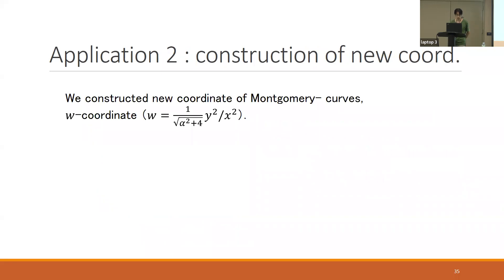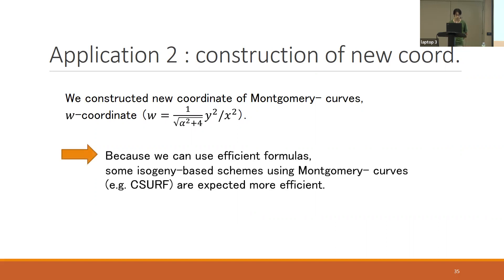The final application is a new coordinate of Montgomery curves, called the generalized Montgomery coordinate. By using this coordinate, we can use efficient formulas of generalized Montgomery coordinates. So some isogeny-based schemes using Montgomery-minus curves, for example CSIDH, are expected to be more efficient.